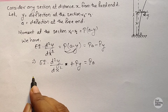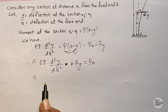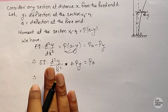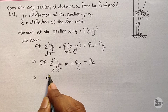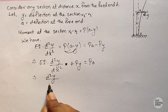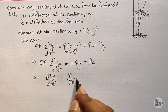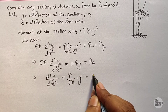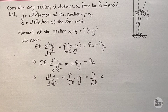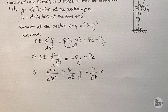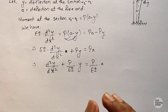Dividing every term by EI, we get the standard differential equation: d²y/dx² + (P/EI)·y = (P/EI)·a.